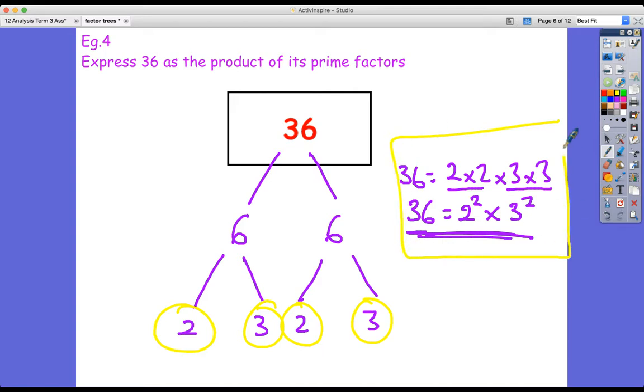And we can go and check our answer at the end. So we could say, what's two times two? Two squared is four, three squared is nine, three times three is nine, four times nine is 36. Yes, it works. And we've split it up. Let's check it as the product. Yes, it's a multiply of its prime. Yes, they're all prime factors.